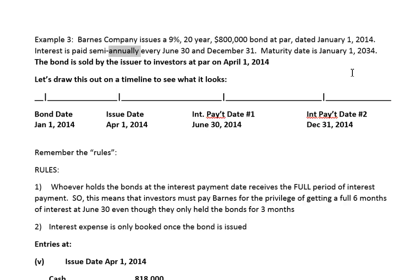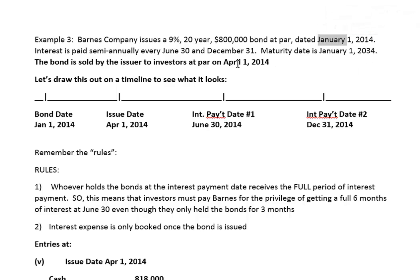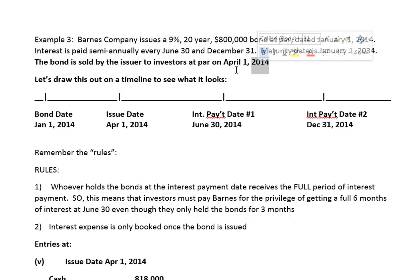Now in this case, the bond is sold by the issuer — that's Barnes, the seller — to the investor at par on April 1, 2014. So we still have a bond date that's different from our issue date.